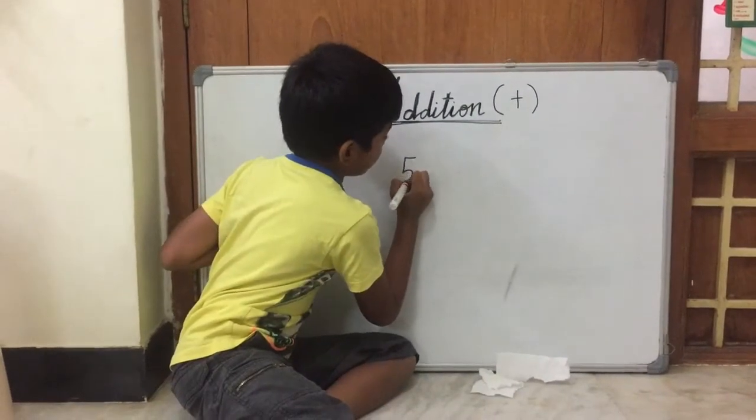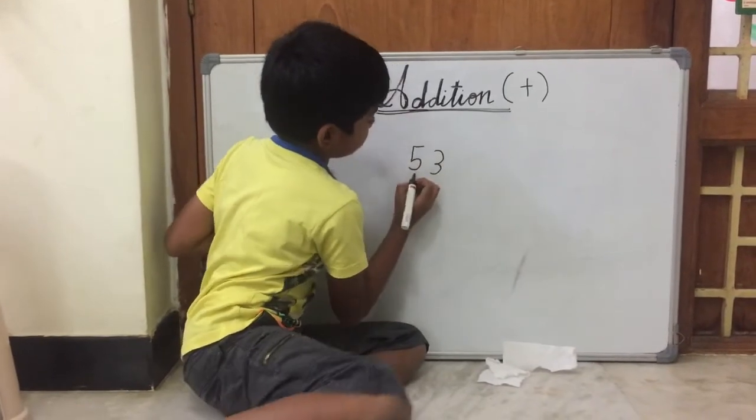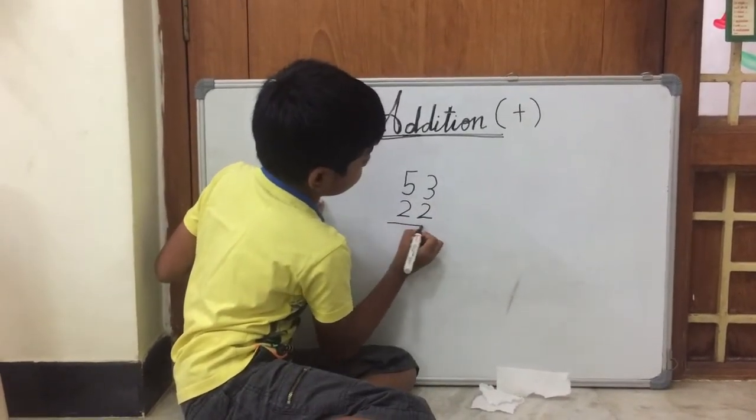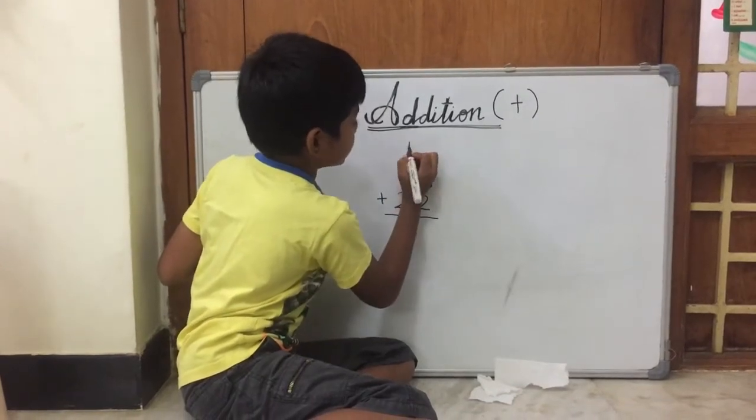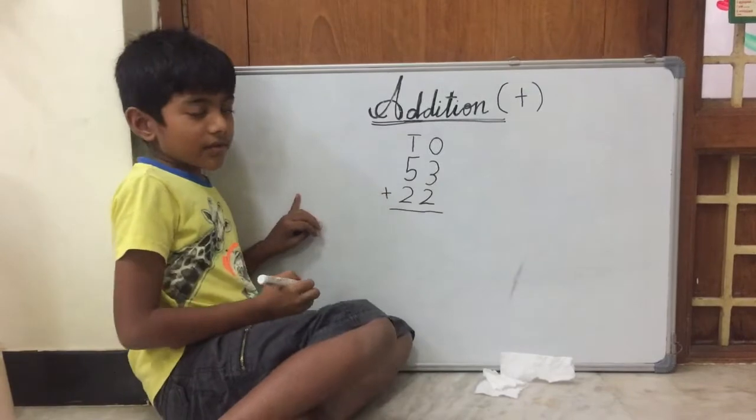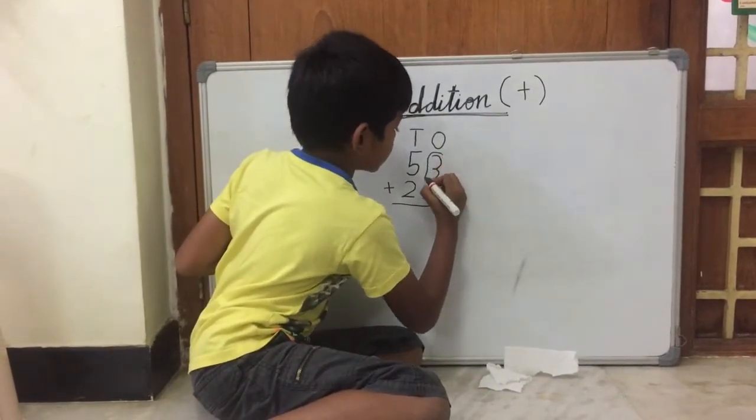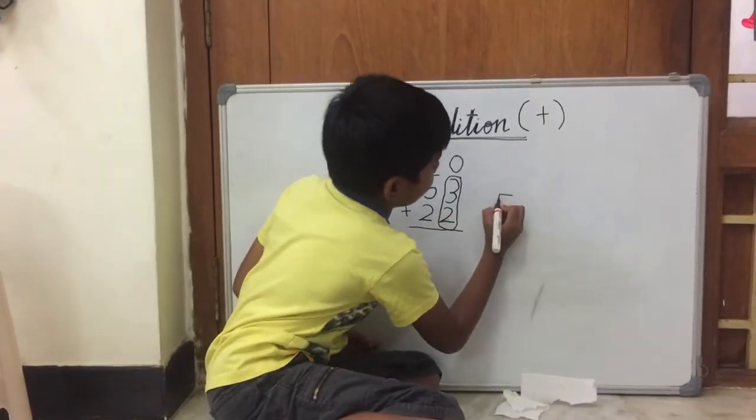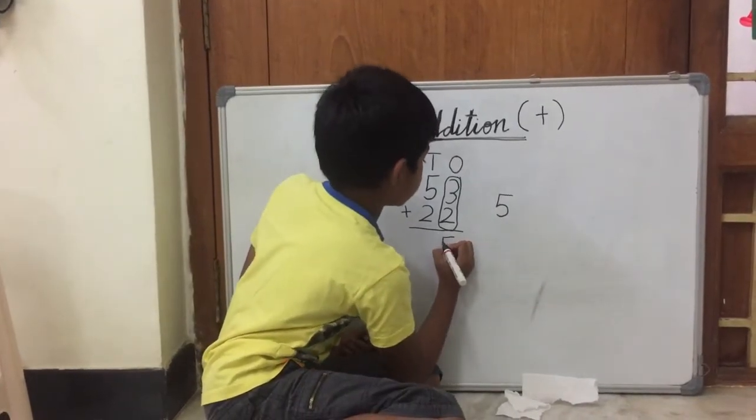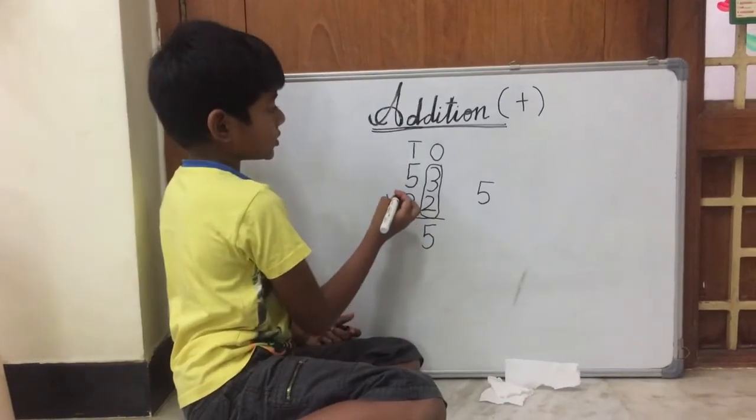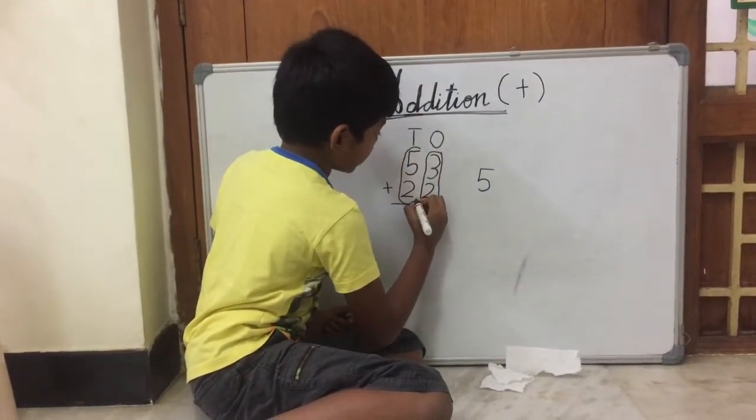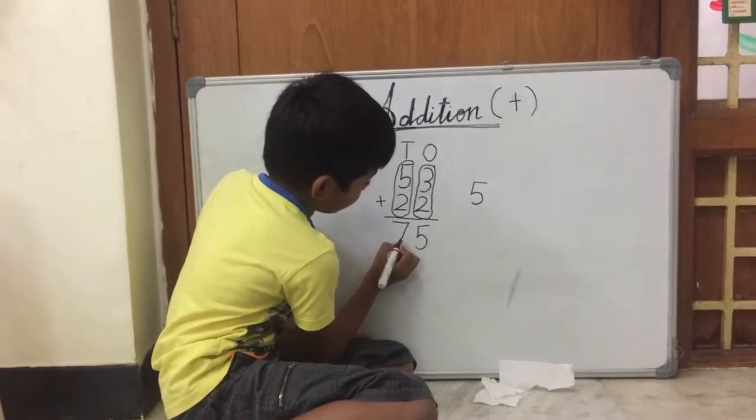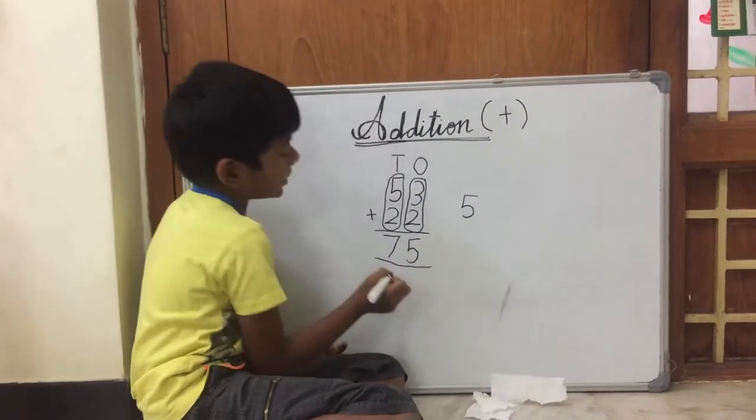Let's see. 53 plus 22. Let's add. This is the 10's place, this is the 1's place. First, we need to add the 1's column. What is 3 plus 2? Yes, it is 5. So we should write the 5 under the 1's column. And now let's add the 10's. What is 5 plus 2? Yes! It is 7. So we should write 7 right here. So the answer is 75.